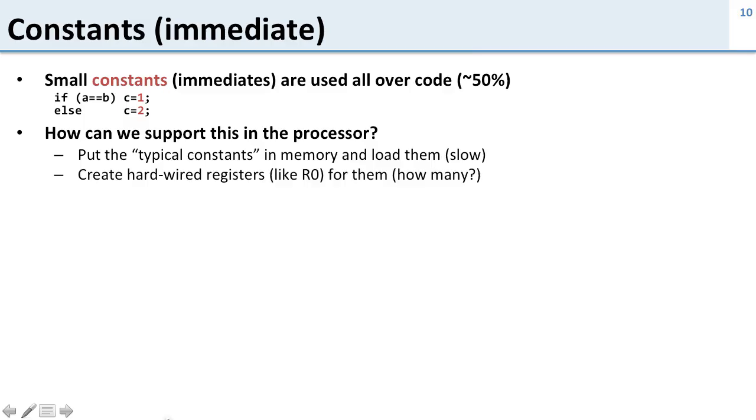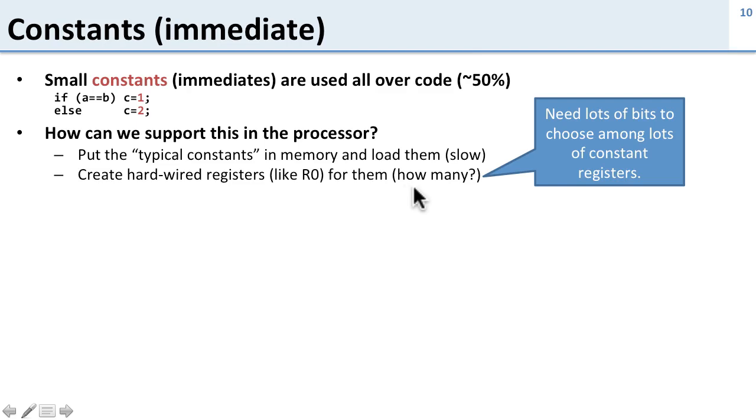Another approach we've seen is creating hardwired registers. So we did this with R0. Remember we wanted the constant 0, so we made register 0 equal to 0. And you could do this, but there's a question: how many of them do you put in?